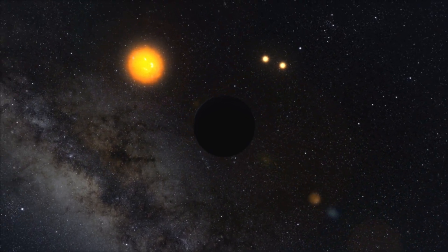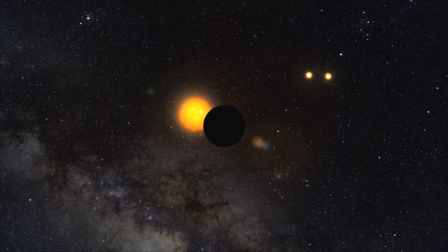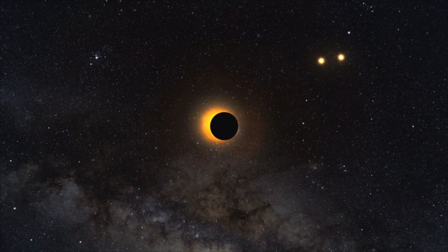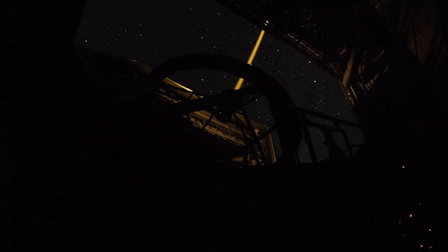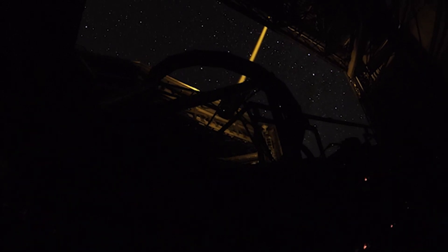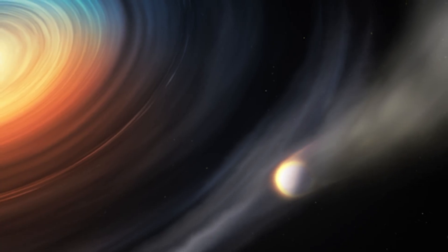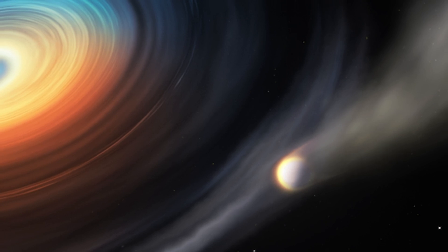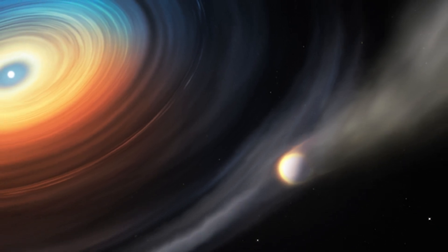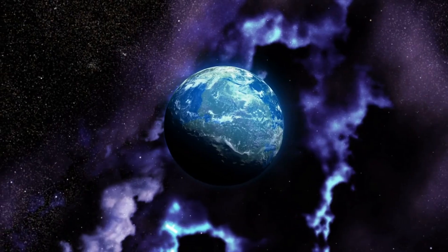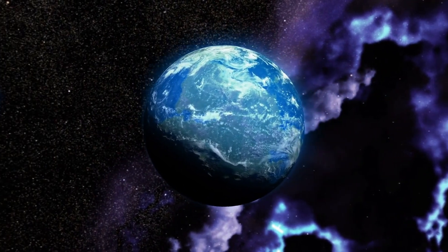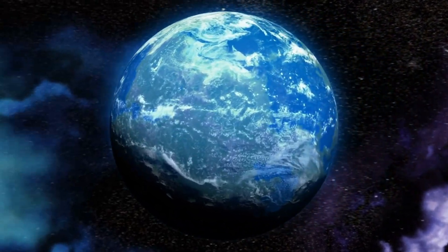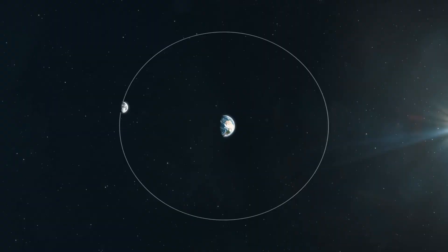On closer examination, Proxima b turns out to be very similar to Earth, with a radius 1.1 times that of Earth, and a mass 1.3 times that of Earth, indicating that it is a rocky world with an equivalent density. However, there are significant differences. The first is the location of the two planets in their respective solar systems.